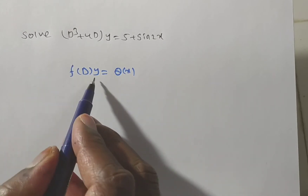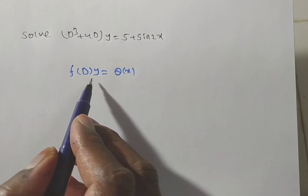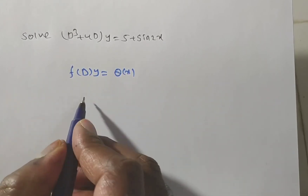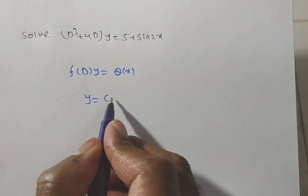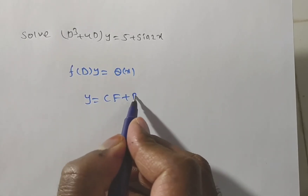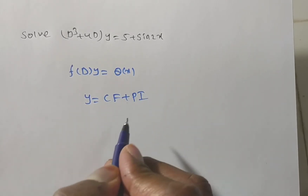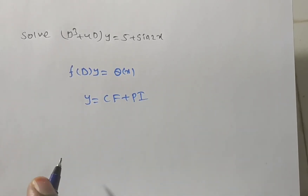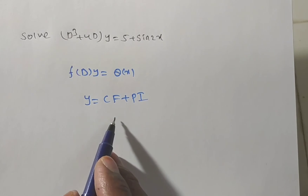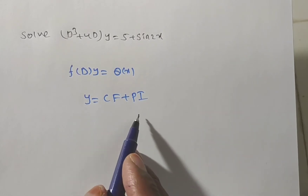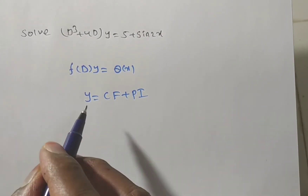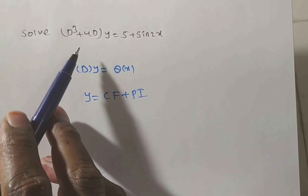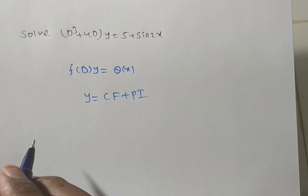The general solution of f(D)·y = Q(x) is y(x) = complementary function + particular integral. First, we have to find out the complementary function.